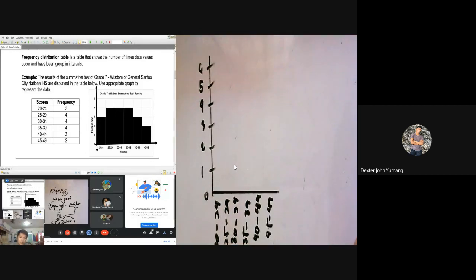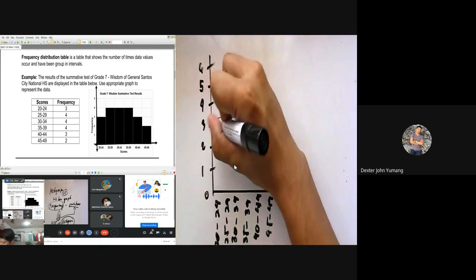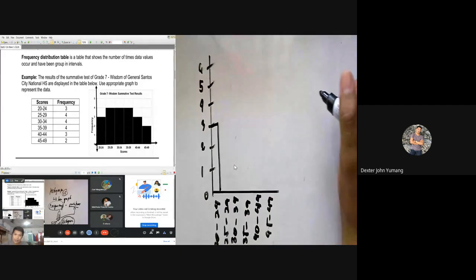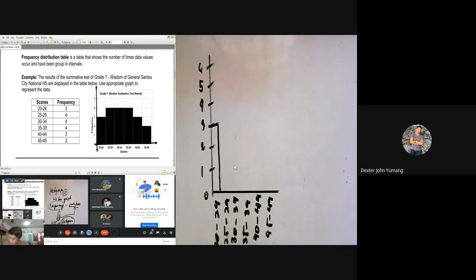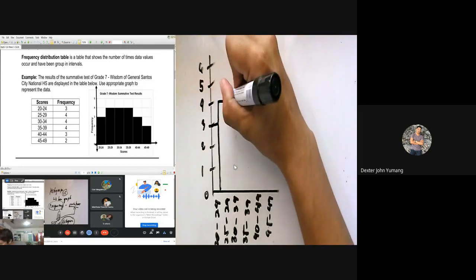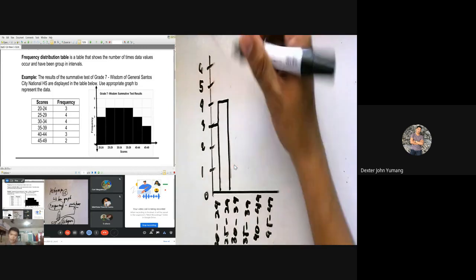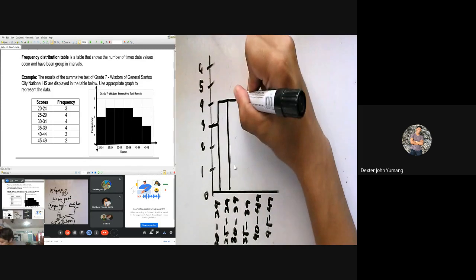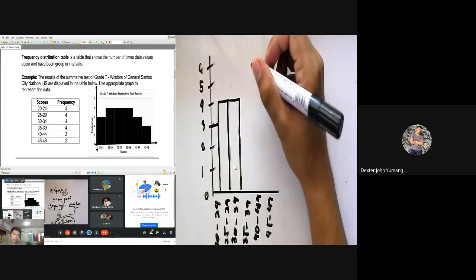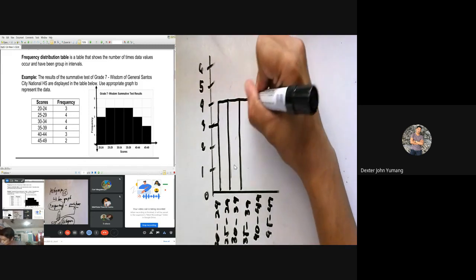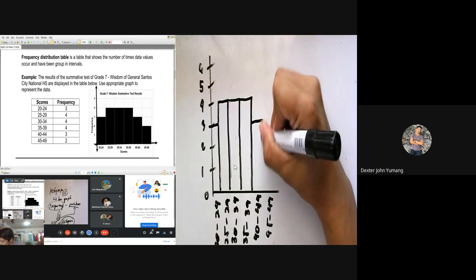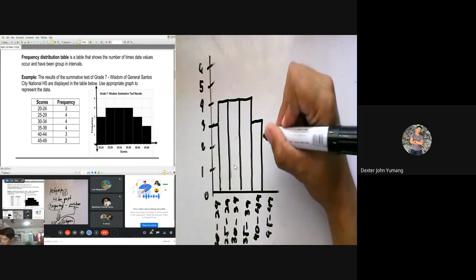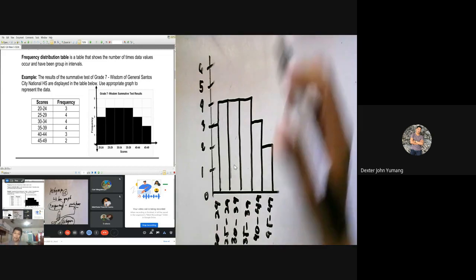Next, 20 to 24, sabi daw po ang frequency is three. Close talaga yung gagawin nyo, galing sa three i-close nyo yung graph. Next, 25 to 29, sabi daw po four. Next, 30 to 34, four din po. The next one is 35 to 39, four din po. The next one is 40 to 44, tatlo. And the last one is 45 to 49, dalawa. So kalinyang ang dalawa.